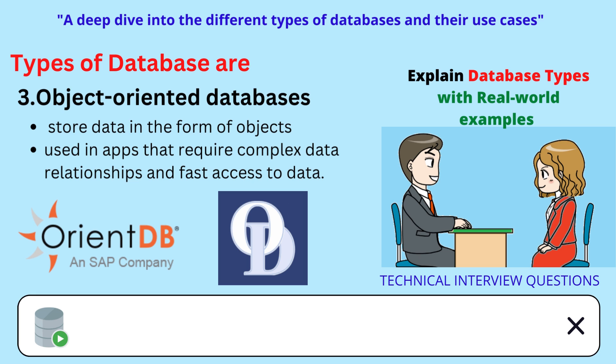Examples of object-oriented databases include OrientDB and ObjectDB. ObjectDB is an open-source object-oriented database management system used by a variety of organizations to store and manage data for various applications. It is known for its support of distributed data management, high performance, and high scalability.